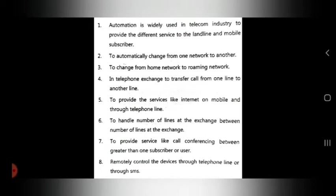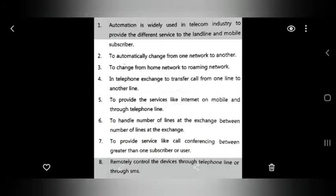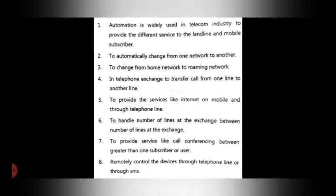Fifth, automation provides services like internet on mobile and through telephone line. Sixth, it handles the number of lines at the exchange. Seventh, it provides services like call conferencing between more than one subscriber. Eighth, it remotely controls devices through telephone line or SMS — all possible because of automation.